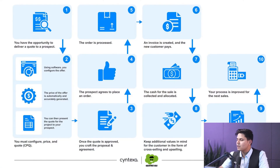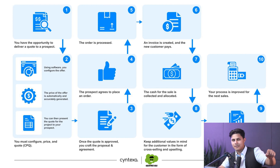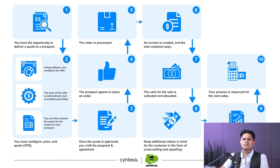Once you get the cash for the sale and it gets allocated, you keep the additional values in mind for the customer in the form of cross-selling and upselling. Whenever you want to make a cross-sell or upsell, the data for all points of the process is analyzed, gets reported, and your process is improved for the next sales cycle. The complete cycle is what we call a sales cycle, but what we call quote-to-cash is where the quotation gets created, approved, the order gets placed, the invoice gets created, the cash gets collected, and the revenue gets reported and utilized for the next upsell or cross-sell.